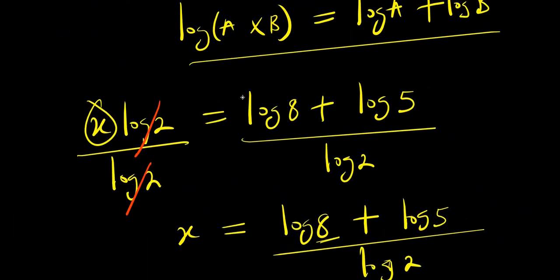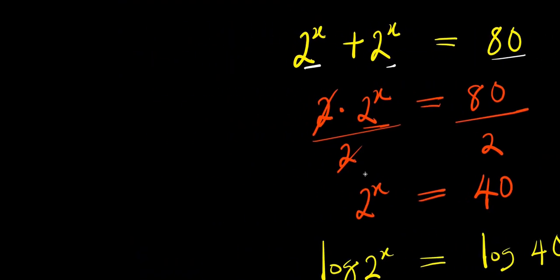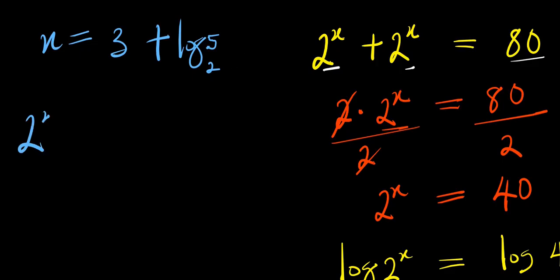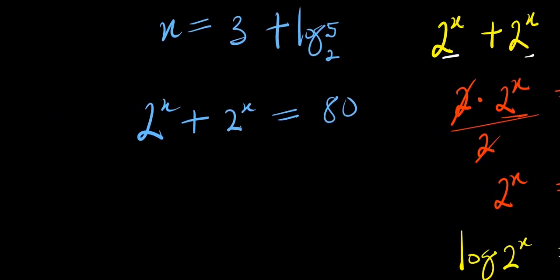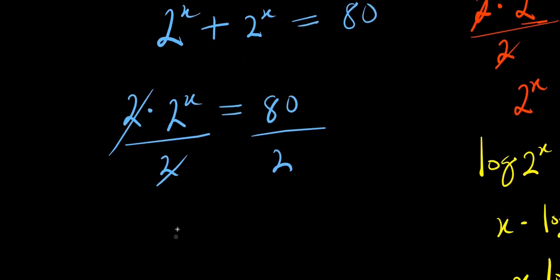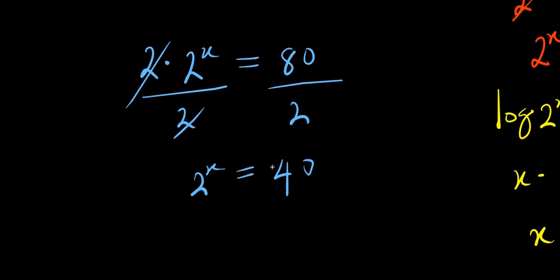Now what we can do next is to check by inserting these values for x. So from here we have x equals 3 plus log 5 to the base of 2. Then this question remains 2 power x plus 2 power x equals 80. Let's simplify this by factoring out 2 power x, so we have 2 times 2 power x equals 80. Divide both sides by 2, this cancels, we have 2 power x equals 40. And our x is simply 3 plus log 5 to the base of 2.